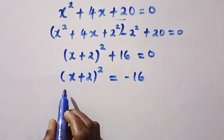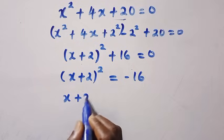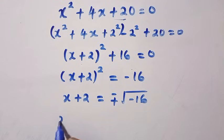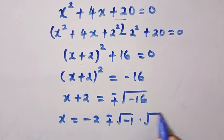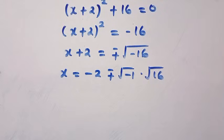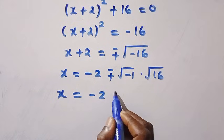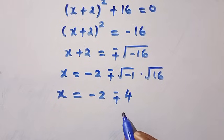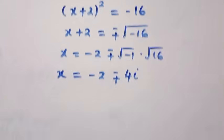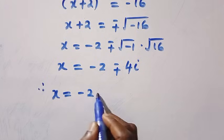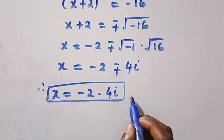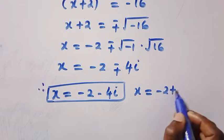Taking the square root of both sides: x plus 2 equals plus or minus square root of negative 16. We separate this as square root of negative 1 times square root of 16, which is i times 4, that is 4i. Therefore x equals negative 2 plus or minus 4i, giving us two complex solutions: x equals negative 2 minus 4i, and x equals negative 2 plus 4i.